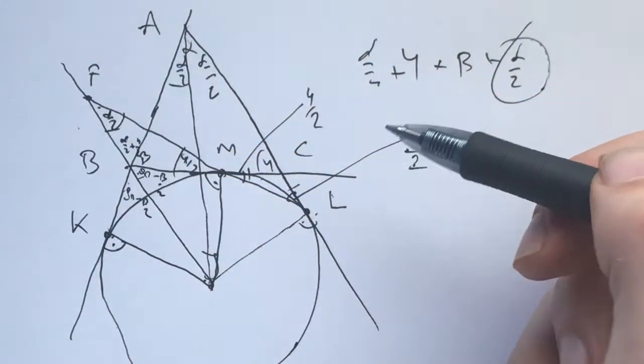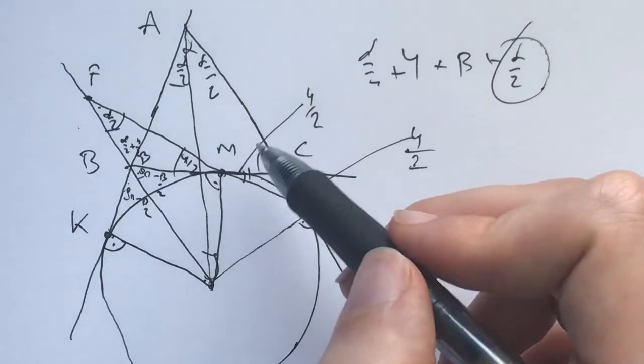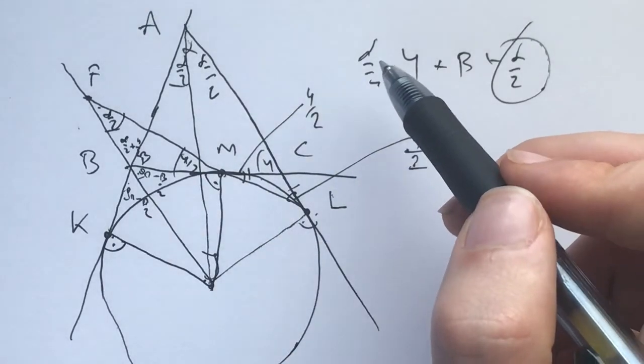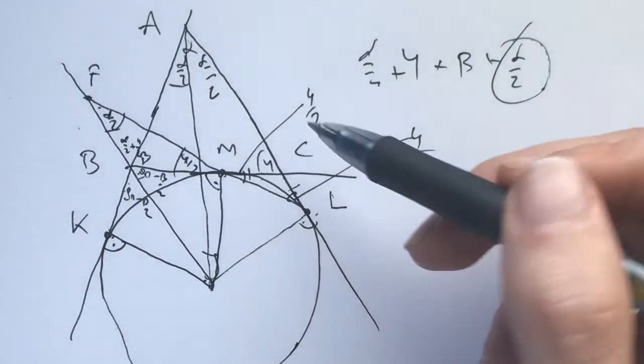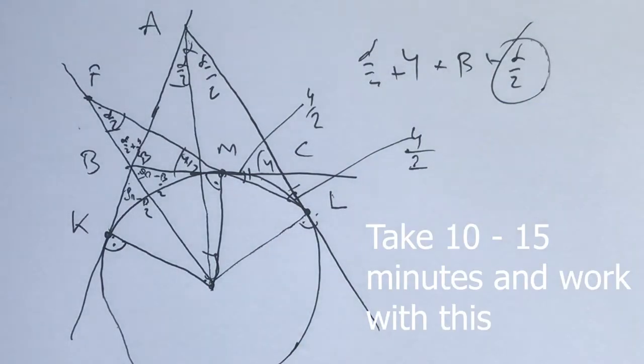And now with that, knowing that F is on the circle, in a similar way, we know that the point G, which is the intersection of KM and CJ is also on the circle. And now with that, I invite you to take another 10 to 15 minutes and push the problem further. What would you do next?